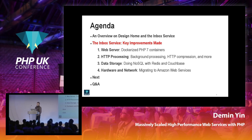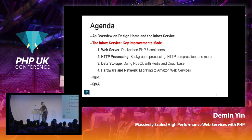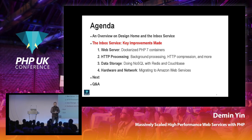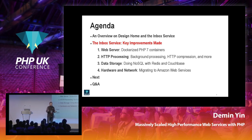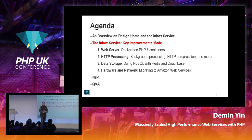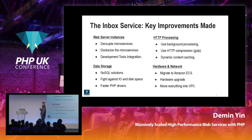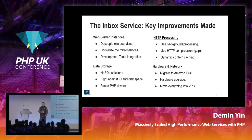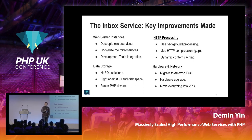Now we're going to discuss some different improvements we've made to make our APIs very fast. We started development about three years ago, and in these three years we've made tens or even hundreds of improvements to speed up our microservices. I'll focus on key improvements grouped into four categories: web server, HTTP processing, data storage, and hardware and network. In each category I'll discuss three improvements we made.